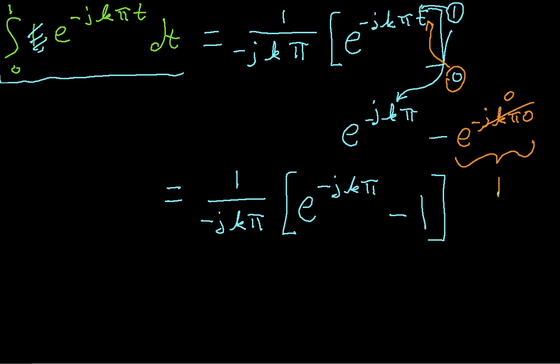So e^(-jkπ), again, this is cosine kπ minus j sine kπ. This term is always 0. This term, as we just discussed, is going to be 1 when k is even and minus 1 when k is odd.